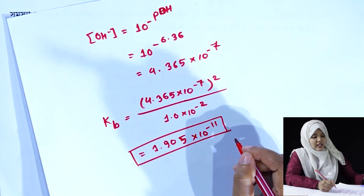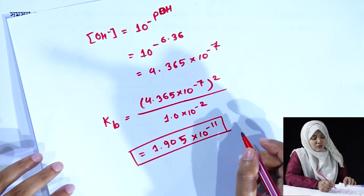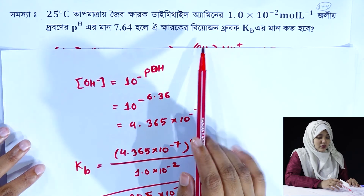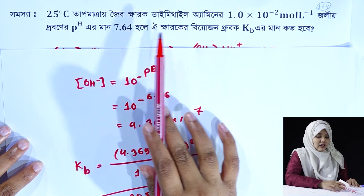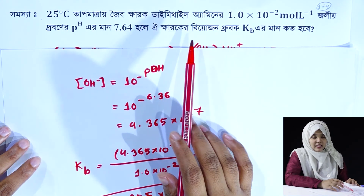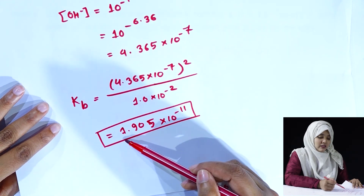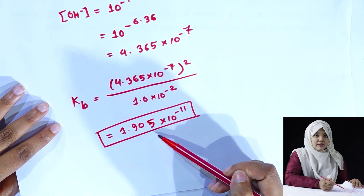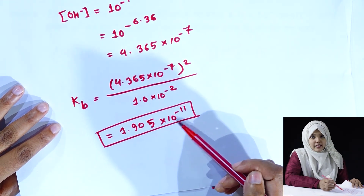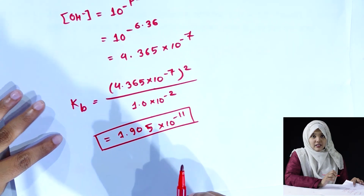So we will get the whole value of Kb as 1.905 into 10 to the power minus 11. That's how you can find the solution. I'll see you in the next video.